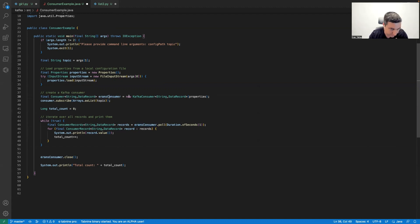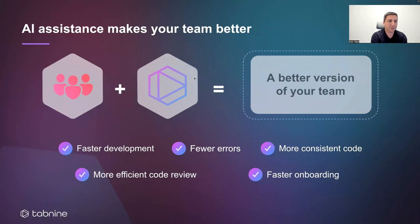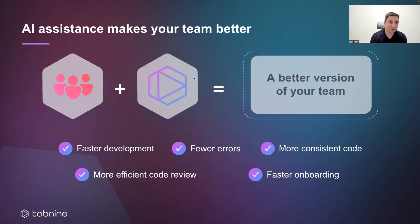You can see that it uses the run consumer that has been defined here, and it correctly does the polling with a duration of one second, and even increments the total counter that should have been implemented in the context of this problem. To summarize, AI assistance makes your team better: you get your team aligned, more consistent code, faster development by automating the mundane parts, fewer errors by everyone consuming the same best practices and known patterns — which also leads to more efficient code review and faster onboarding, because even new developers get suggestions based on what has been learned from the codebase. Thank you very much for your attention.